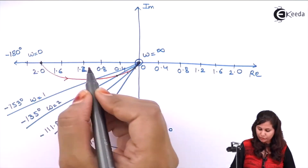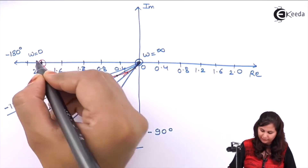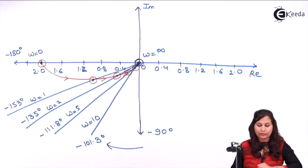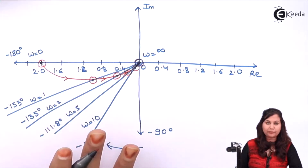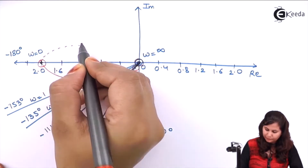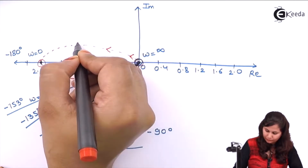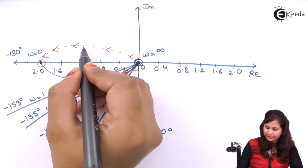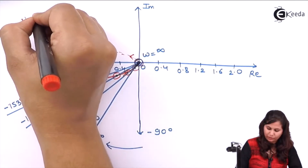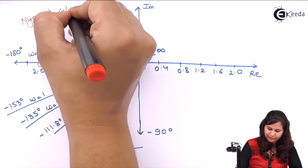Starting from ω = 0 and terminating at ω = ∞, these are the points we have. This is our polar plot of the system. Now let's draw the mirror image of this polar plot — that mirror image is the Nyquist plot of the system whose transfer function we were given.